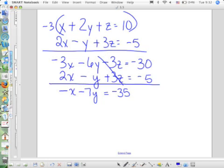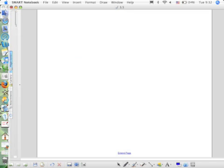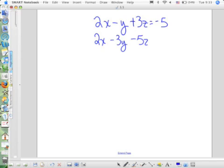So, I've taken care of step one. Now, I'm going to look at the next two equations. 2X minus Y plus 3Z equals negative 5. And the third equation was 2X minus 3Y minus 5Z equals 27. Now, I have to get rid of Z again. I've already gotten rid of Z. I have to stick with the same letter.